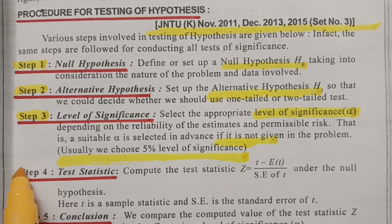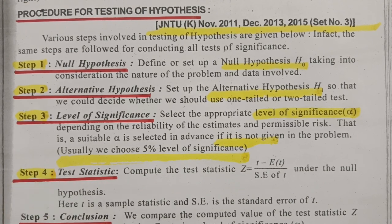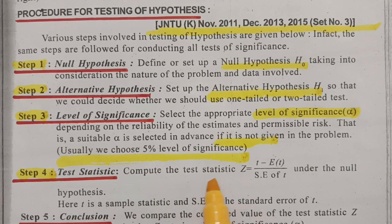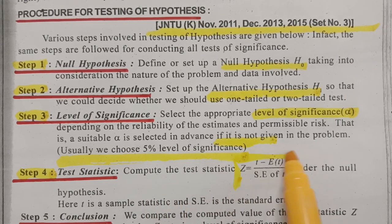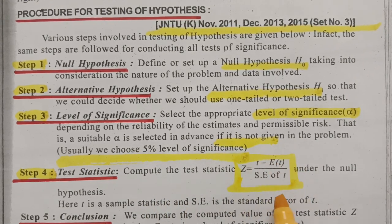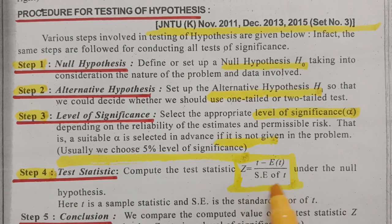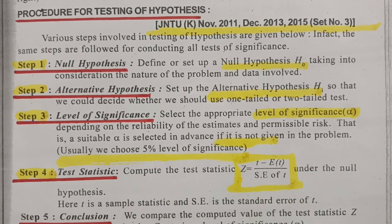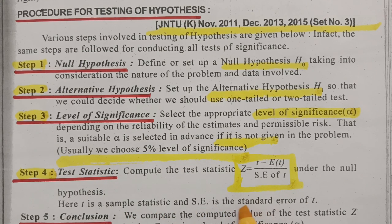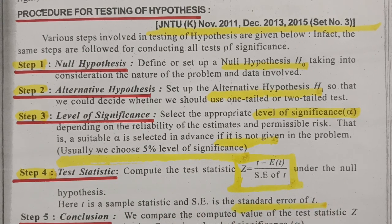Step 4 is the test statistics. Compute the test statistic Z, which equals t minus the expected value of t, divided by the standard error of t, under the null hypothesis. Here t is the sample statistic and SE is the standard error of t.